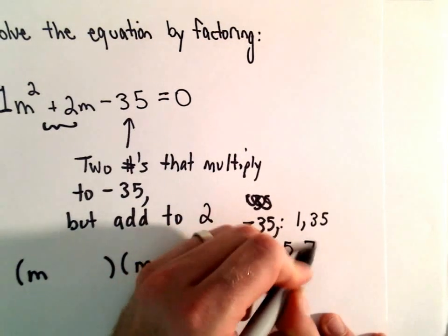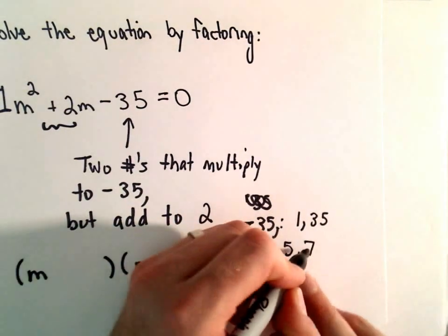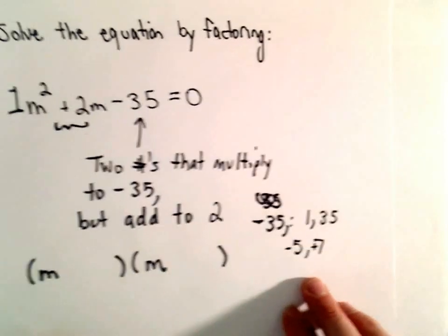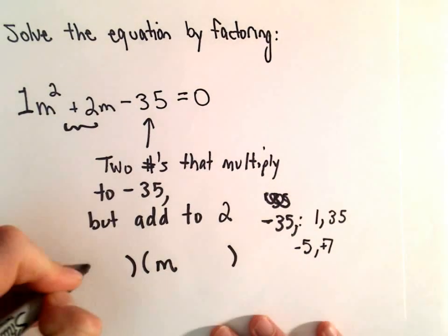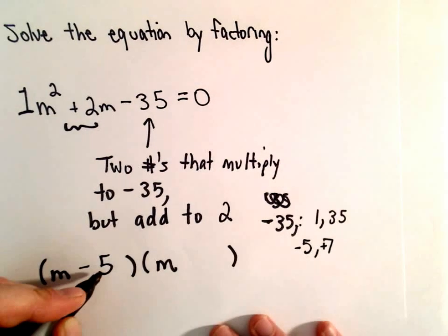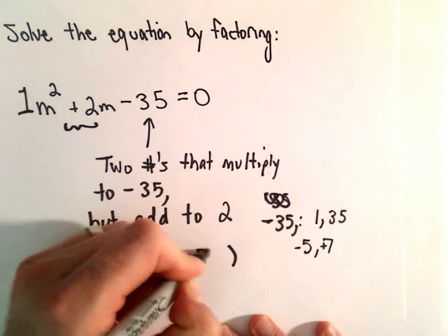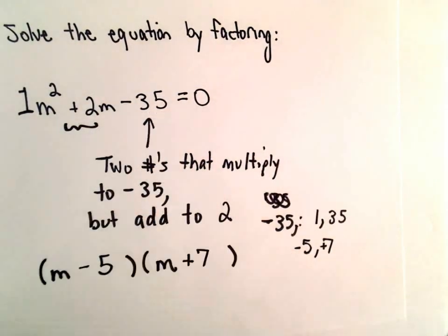How about some combination of 5 and 7? Well, if we made the 7 positive and the 5 negative, those would certainly multiply to negative 35 but add up to positive 2. So those are going to be our candidates. We'll have m minus 5, m plus 7. That's how the left side factors.